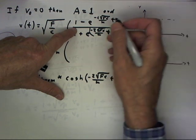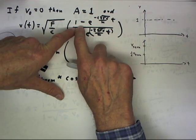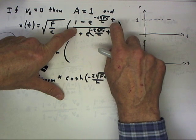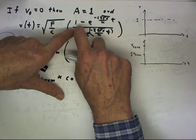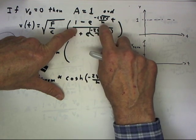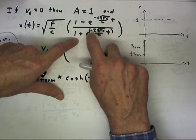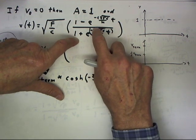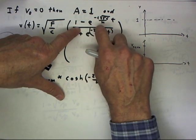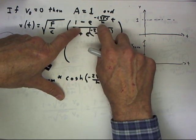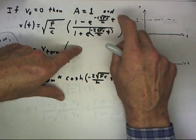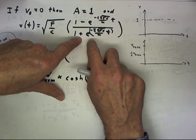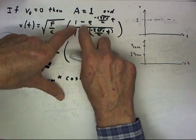The expression 1 minus e to the negative 2 times the square root of fc, etc., is a function that has value 0 when t equals 0 — that is, the numerator equals 0 at t equals 0. The denominator has value 2 when t equals 0.